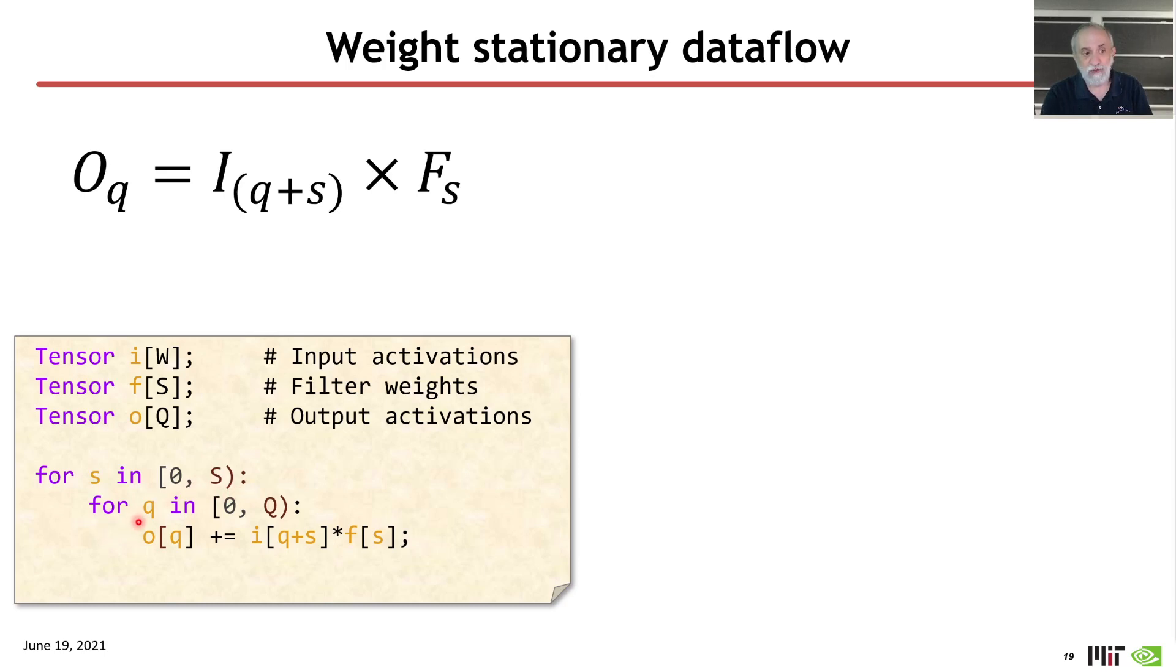We're going to traverse Q, the index that is used on the output, and we're going to traverse all of the outputs from zero to Q. And then what we're going to do is do a dot product of that slight computation on the inputs and the current filter weight, and it's going to contribute to a dot product contributing to the output.